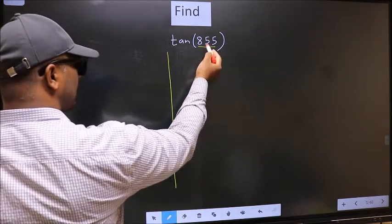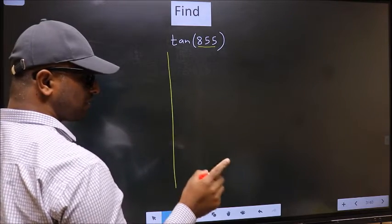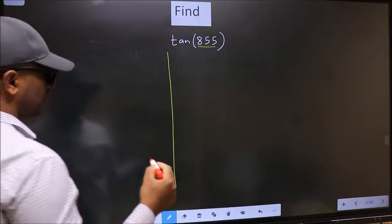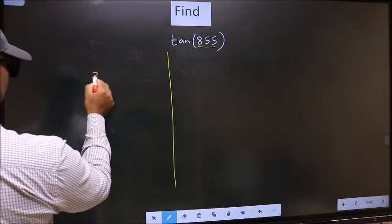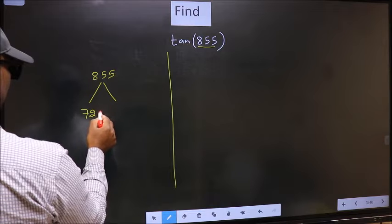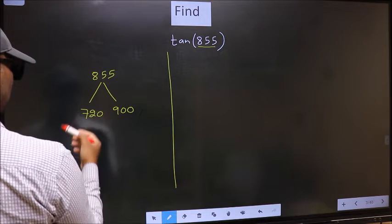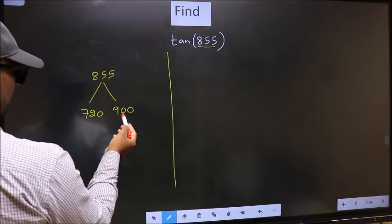Now we should check 855 lies between which two multiples of 180. What I mean is, 855 lies between 720 and 900. This is 180 x 4 and this is 180 x 5.